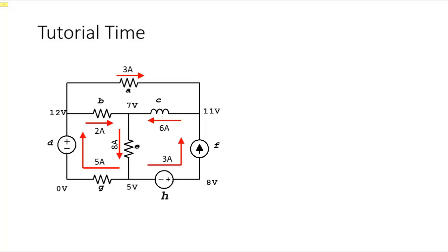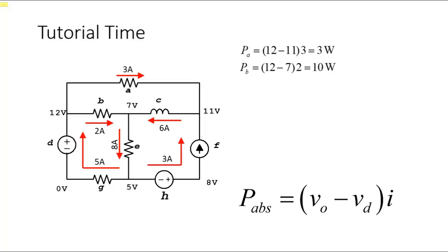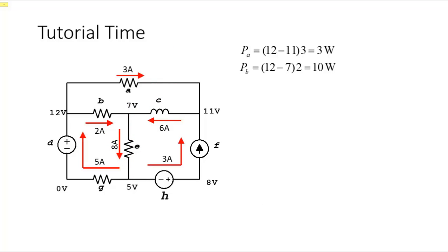In the circuit where we know all voltages with respect to a reference, let's compute the absorbed power in each element. P_A: voltage of the origin of the current is 12 volts, minus voltage of the destination — 11 — multiplied by the current — 3. That is 12 minus 11 times 3, which is 3 watts. Element A absorbs 3 watts. P_B: voltage of origin is 12, minus destination voltage — 7 — multiplied by 2. That is 12 minus 7 times 2 — 10 watts. Element B is absorbing 10 watts.